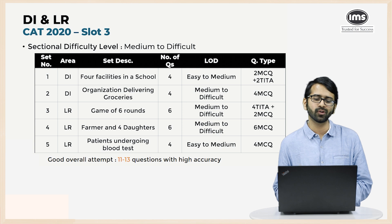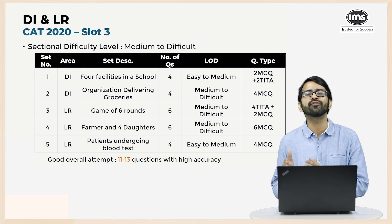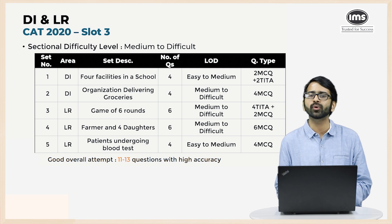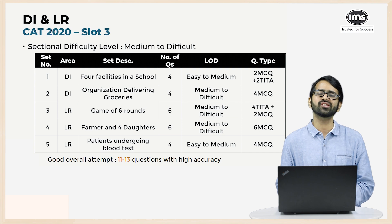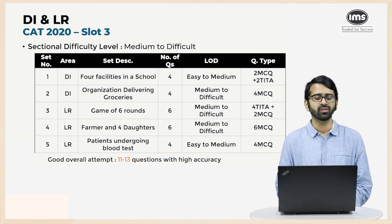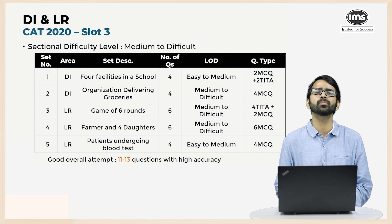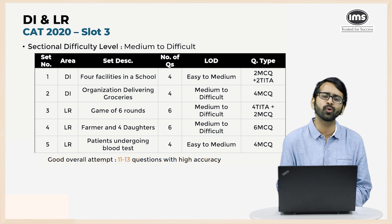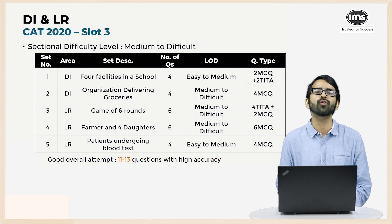The next two were six-question sets. The first was a game of six rounds — medium to difficult — recommended only for students very adept at DILR, with four TITA and two MCQ questions. The fourth set was on a farmer and four daughters, also six questions of medium to difficult level with all six being MCQs. The fifth and last set was on patients undergoing blood tests — the easiest of the five sets — with four MCQ questions.